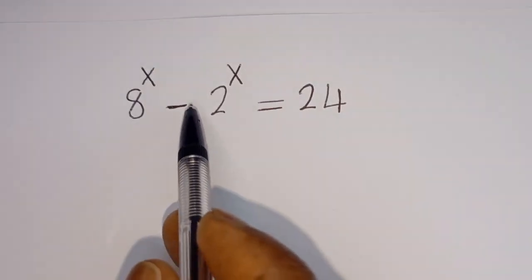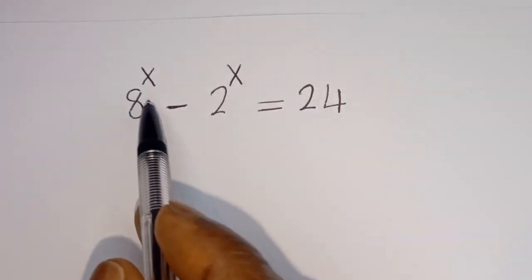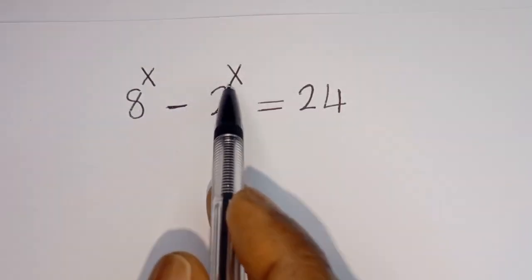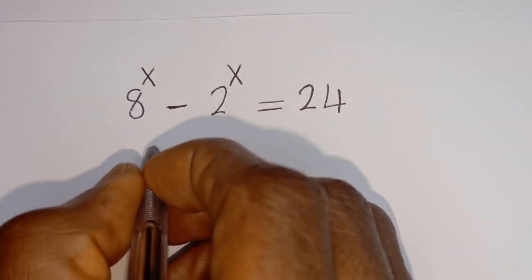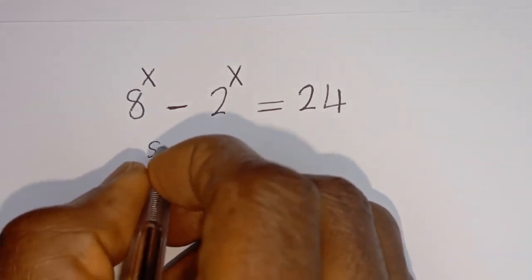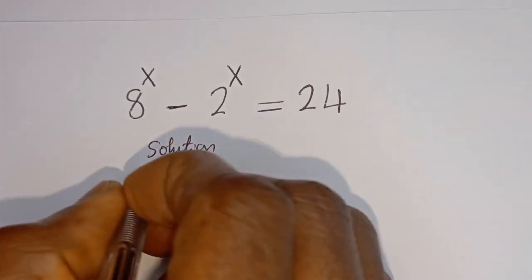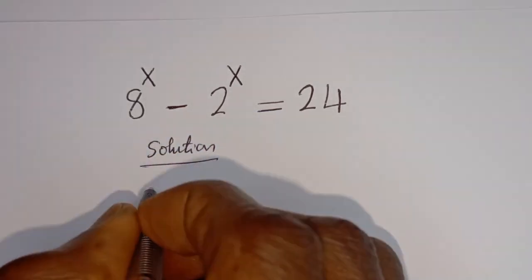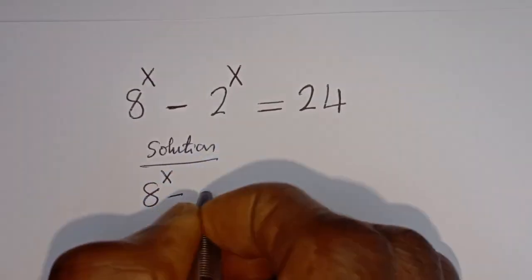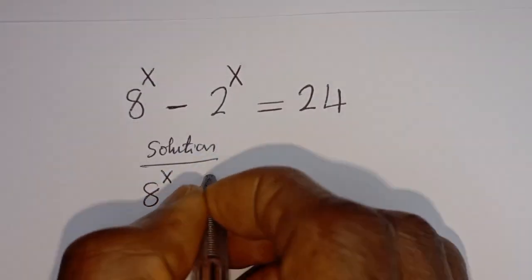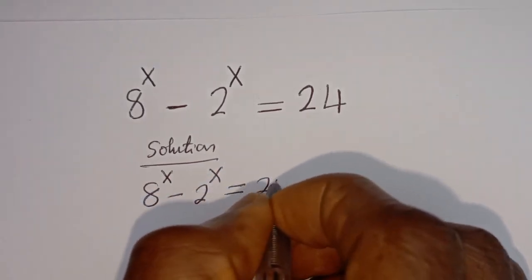Hello. How to solve for x in this equation: 8 to the power of x minus 2 to the power of x is equal to 24. Solution. We have 8 to the power of x minus 2 to the power of x is equal to 24.